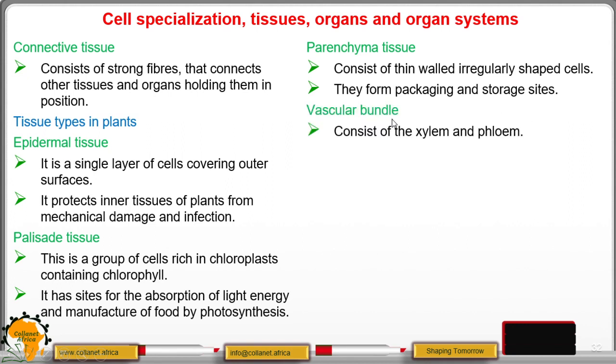We have the vascular bundle also and has the phloem and the xylem. Xylem conducts or transports water and mineral salts up the plant to the leaves from the soil, whereas the phloem transports manufactured food from the leaves to all parts of the plant.